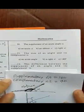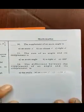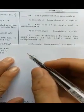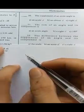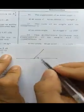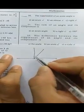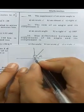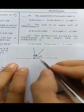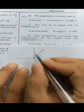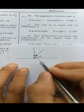The difference between the supplement of an angle and its complement is what? If this is the given angle, its complement makes 90 degrees. The complement of the angle is the part that completes it to 90 degrees, and the supplement of that angle is this one.